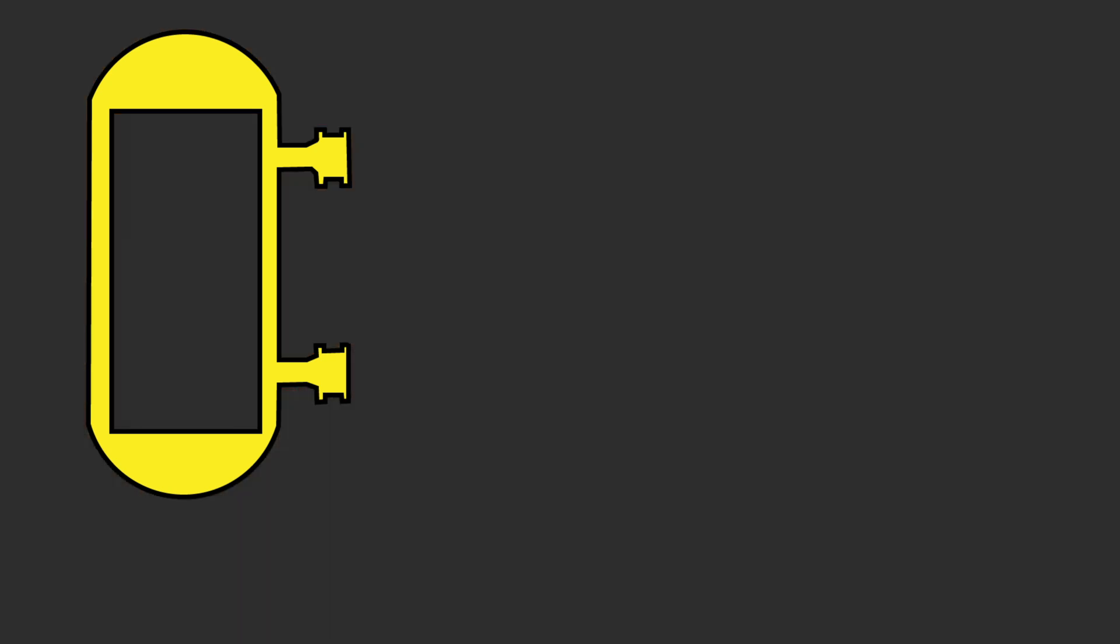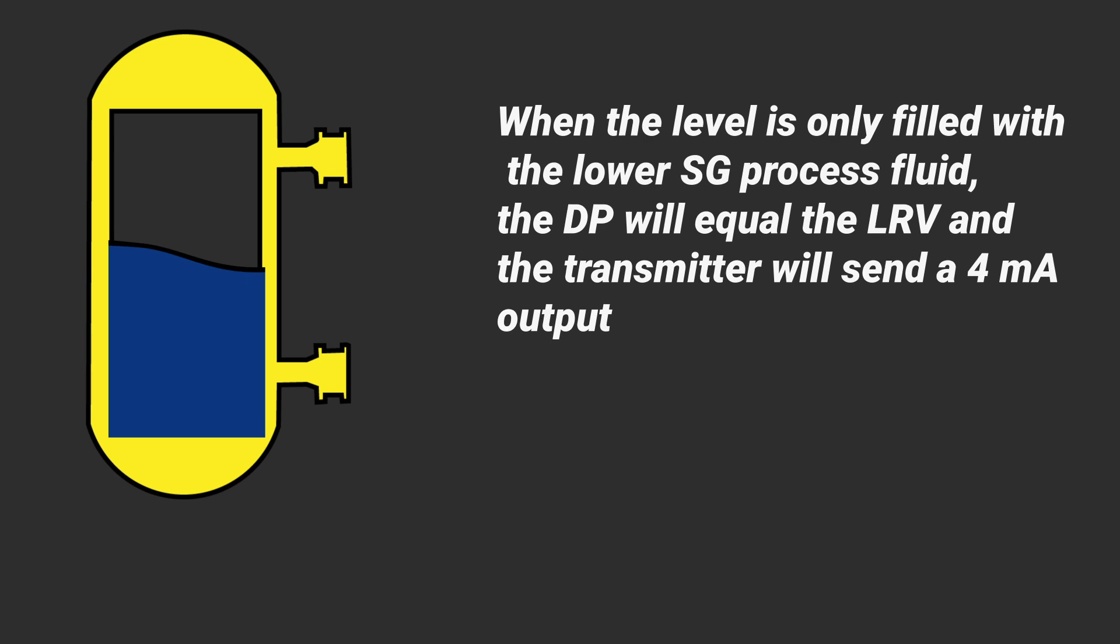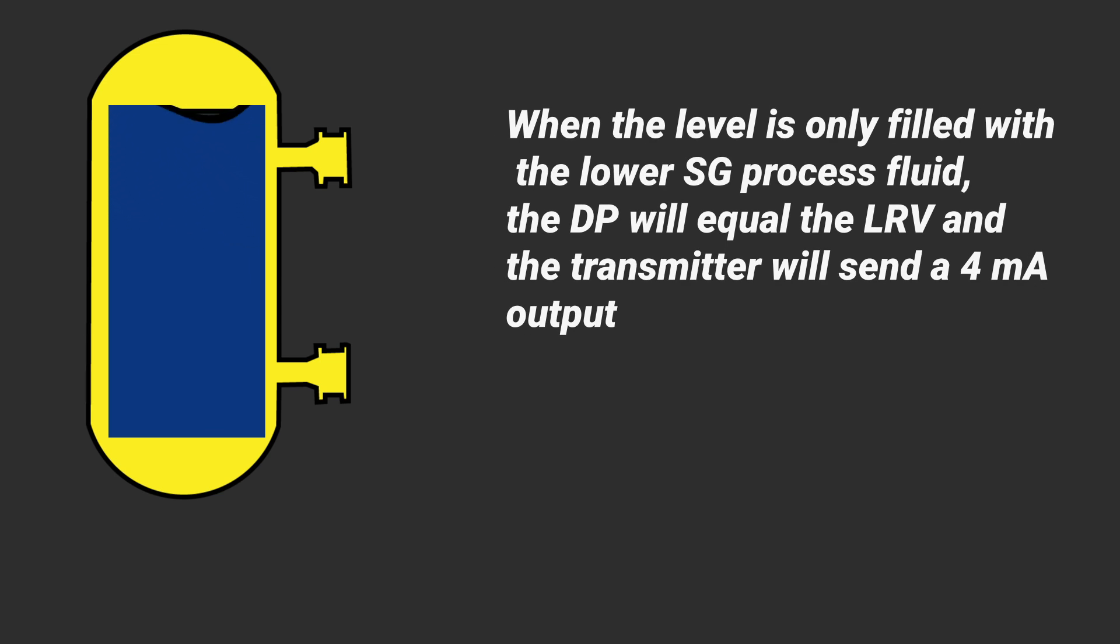Rule number two, when the level is only filled with the lower specific gravity process fluid, the differential pressure will equal the LRV and the transmitter will send a 4 milliamp output.